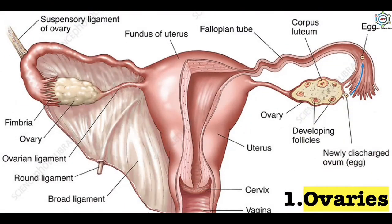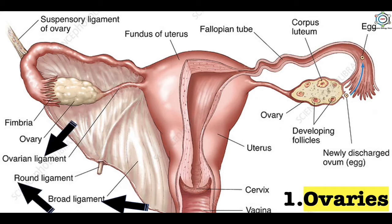The first part is the ovary — the primary sex organ, almond in shape, 2 to 4 cm long, 2 cm wide and 1 cm thick. Located in the lower part of the abdomen, it is held by the broad ligament. Each ovary is connected by the ovarian ligament to the uterus and a round ligament to the lateral pelvic wall. The ovary functions as both exocrine and endocrine, secreting estrogen and progesterone. After menopause, ovaries become small and lose follicles.